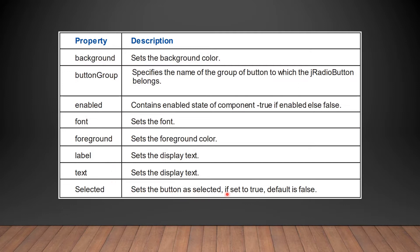The selected property sets the button as selected if set to true; the default is false. So if we set the selected property to true for any JRadioButton, it will be selected. If we set it to false, it will not be selected. By default, the selected property is false.